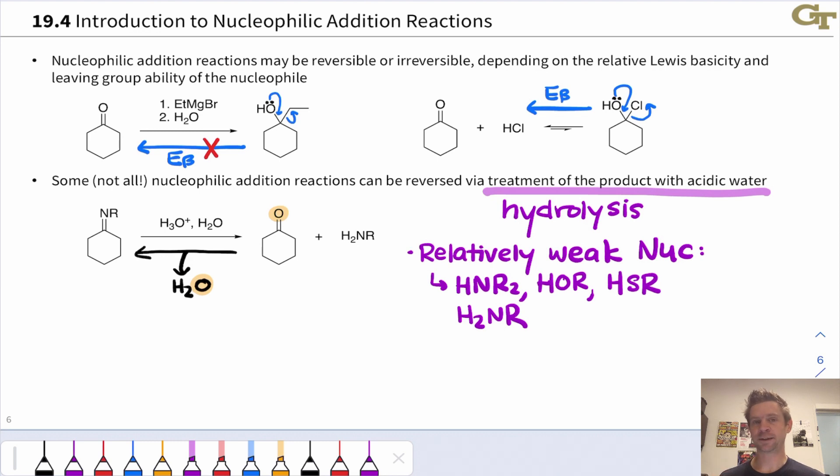This slide makes the point that nucleophilic additions may be reversible or irreversible. Irreversible reactions are heavily thermodynamically favored such that they can't go backwards. This is common when our nucleophile is very strong—for example, an anion of an element with low electronegativity like carbon or hydrogen or an organometallic reagent. These add to the carbonyl carbon and then they get stuck.